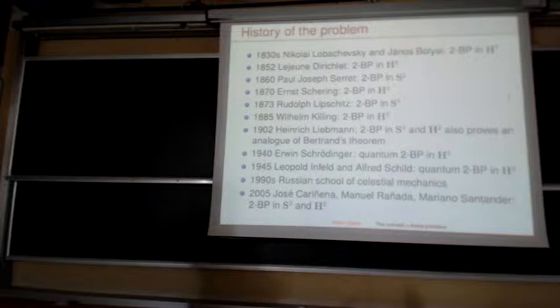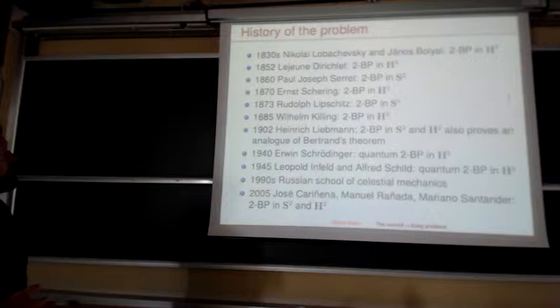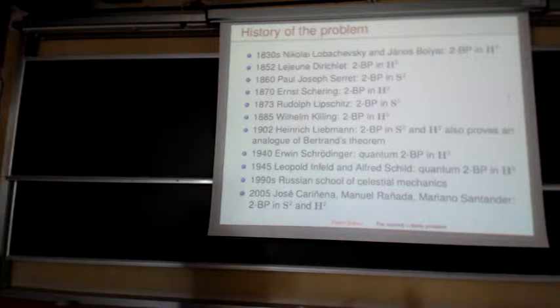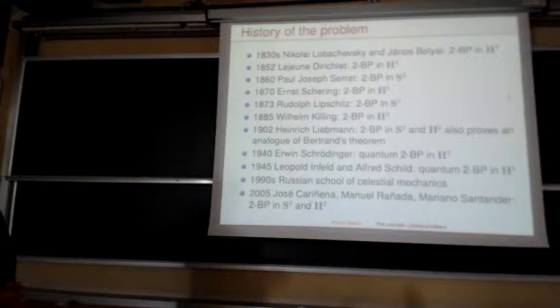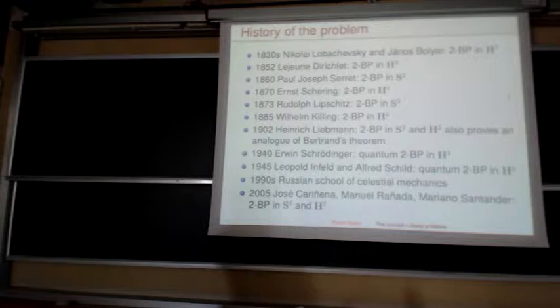There were people who worked on this problem — the two-body problem only. Famous names include Léjeune Dirichlet and Serret — not the one of the Frenet-Serret frame, but another Serret; they were cousins who lived at about the same time. Serret was a colleague of Gauss and was the first to write the potential explicitly. Bolyai and Lobachevsky just explained how one should take the potential but never wrote it down explicitly.